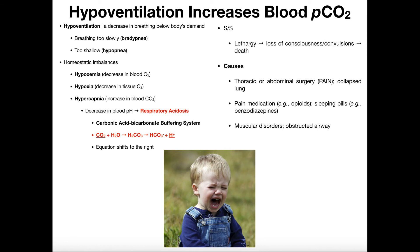Hypoventilation is the opposite — a decrease in breathing below the body's demand, breathing too slowly. Breathing too slowly is called bradypnea, and breathing too shallowly is called hypopnea. This can cause a number of homeostatic imbalances. First, it causes hypercapnia. If you're breathing slower, you're not getting rid of enough carbon dioxide, so even if CO2 levels were initially normal, not breathing fast enough means you can't eliminate enough CO2. You'll see an increase in blood CO2 and therefore a decrease in blood pH, so hypoventilation can cause respiratory acidosis.